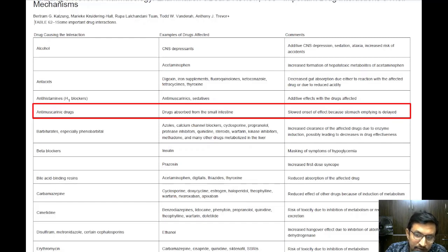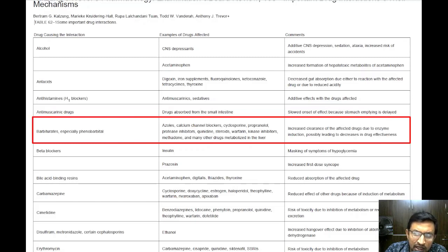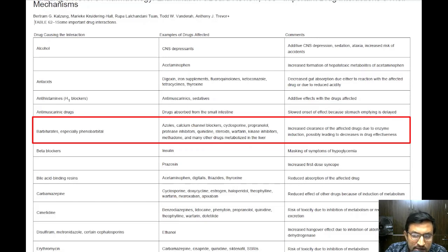Next, we have barbiturates, which present another important area of drug interactions. These drugs can increase the metabolic clearance of many drugs processed in the liver. This means that if you are taking a medication metabolized by the liver — such as certain antifungal drugs, blood pressure medications, immunosuppressants, or anticoagulants — and you take a barbiturate, the effectiveness of the first drug may be reduced as it is broken down more quickly in the liver.